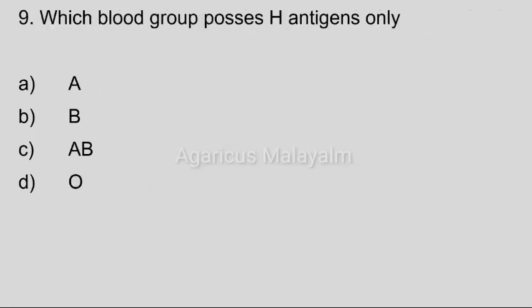Ninth question: Which blood group possesses H antigen only? Answer options — Option A: A. Option B: B. Option C: AB. Option D: O. Correct answer: Option D, O.